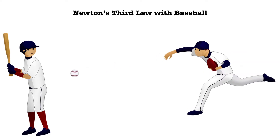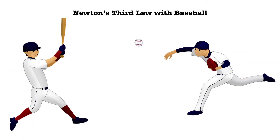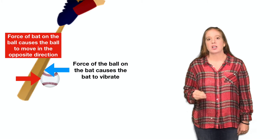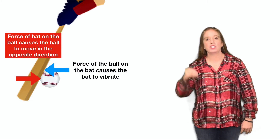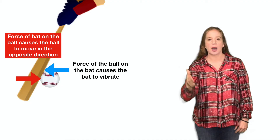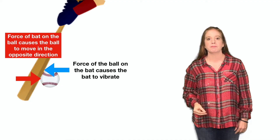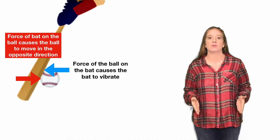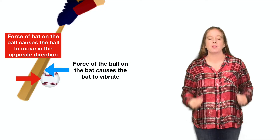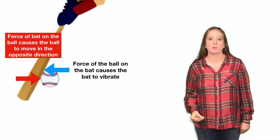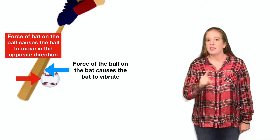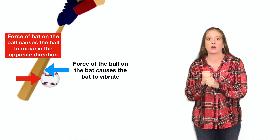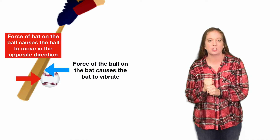You can feel the effect of Newton's Third Law in baseball. When the pitcher throws the ball, the hitter hits the ball with the bat. The force of the bat on the ball causes that ball to change direction and move in the opposite direction. However, that ball also exerts a force back on the bat and causes the bat to vibrate. This is why they teach you to grip the bat tight so that your hands don't feel the force of the vibration.